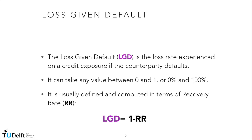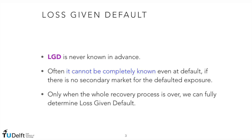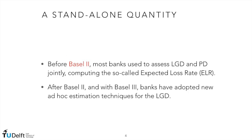we will consider the most important characteristics of LGD. The loss given default is the loss rate experienced on a credit exposure if the counterparty defaults. It can take any value between 0 and 100%, and it is computed in terms of recovery rate — LGD is equal to 1 minus R. LGD is never known in advance, sometimes not even at default, if no secondary market for the defaulted exposure is present. Only when the whole recovery process is over can we fully assess the actual LGD. Before Basel II, most banks used to assess LGD and PD jointly, computing the so-called expected loss rate.